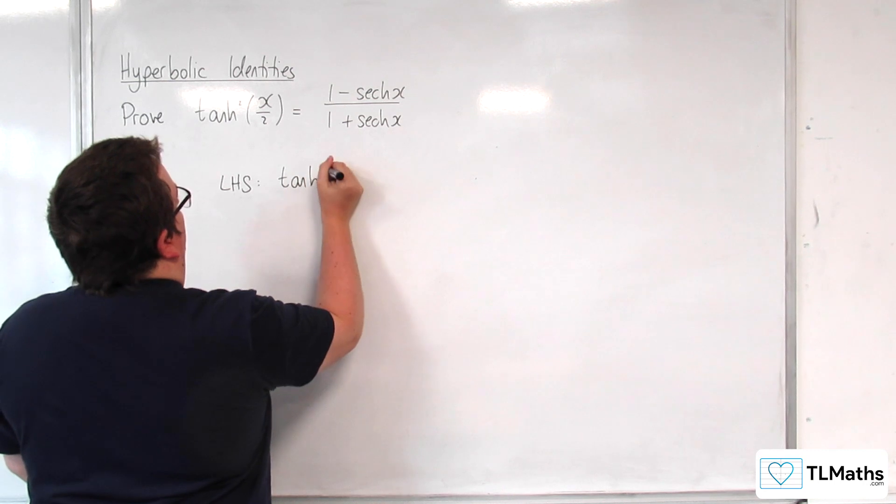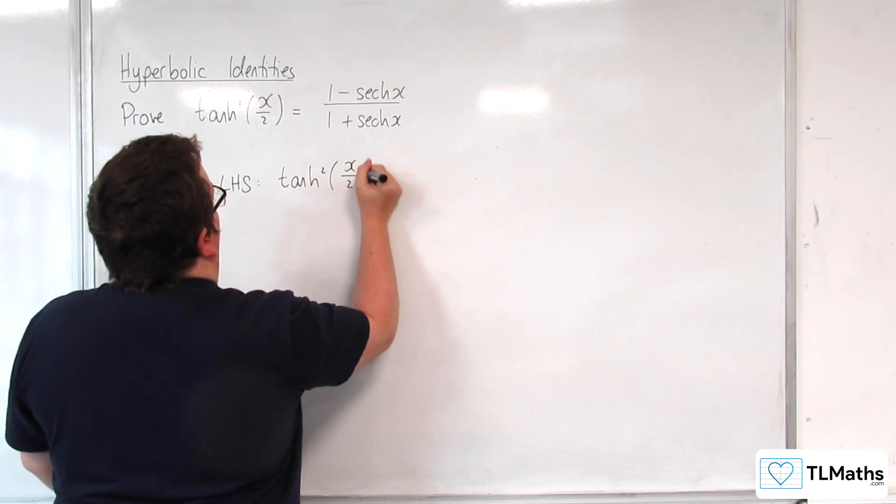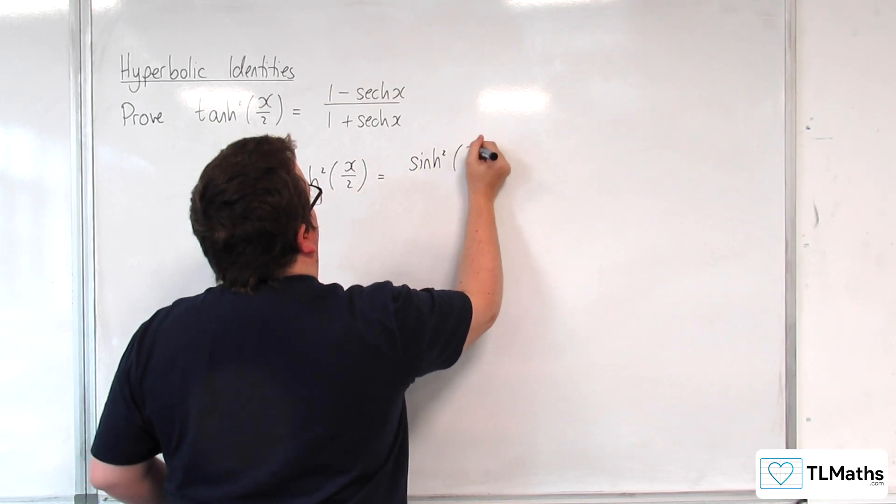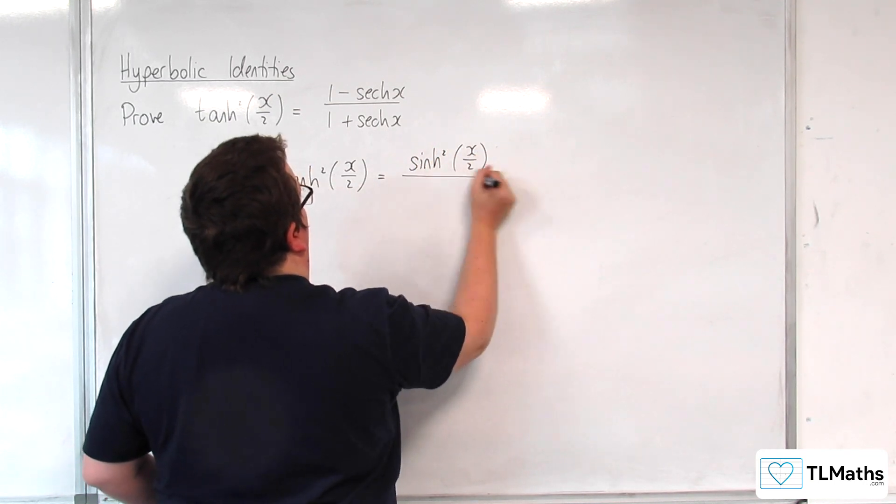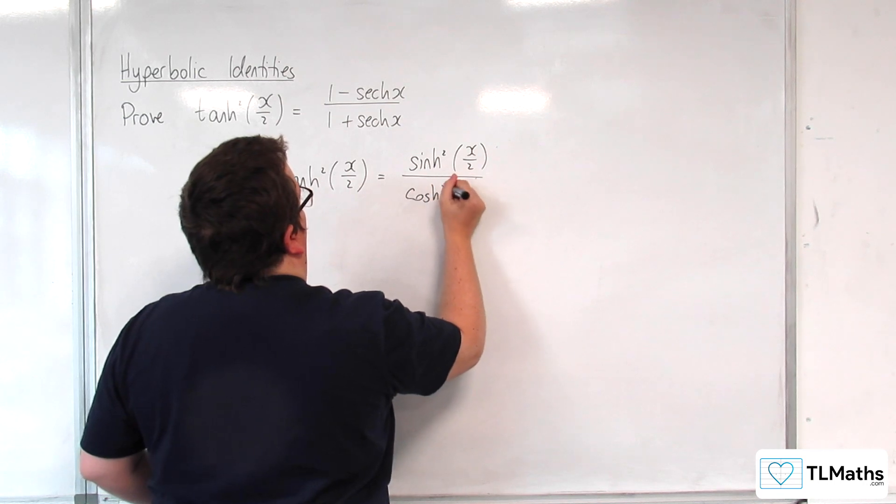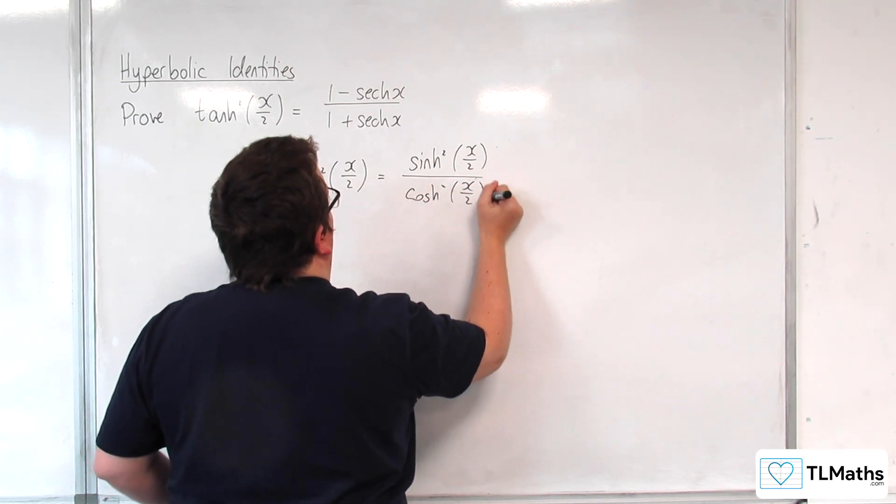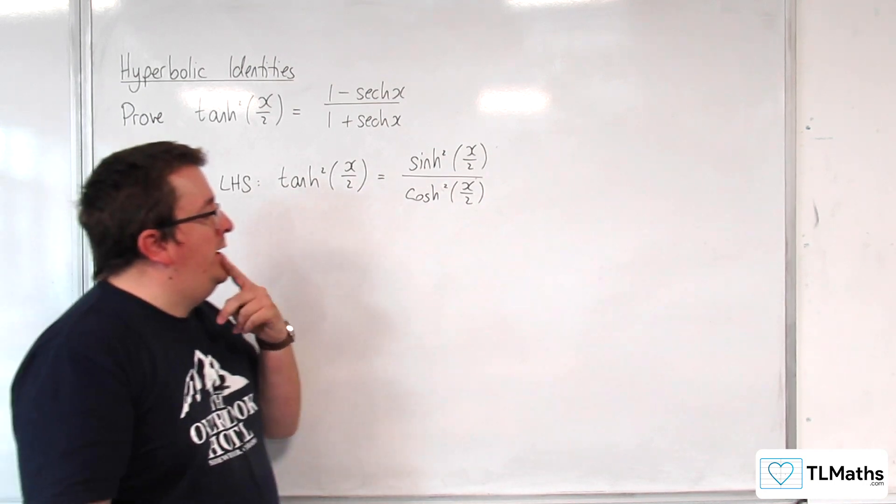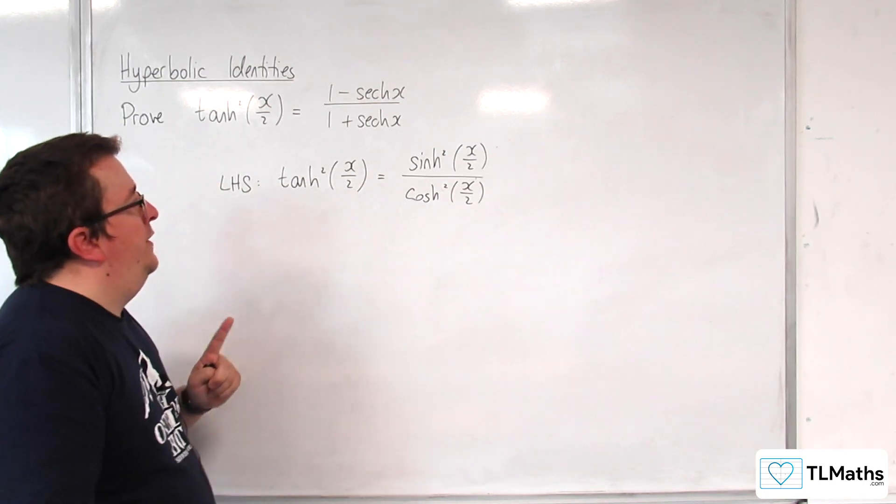So, tan squared of x over 2. The first thing that I would do is I'd write that as sinh squared x over 2 over cosh squared x over 2. Now, I could have potentially used the identity with tan squared involved, but I think I'll do it this way.